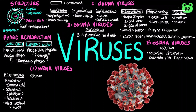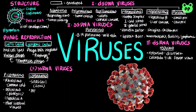Coronaviruses cause mild to severe respiratory tract infections. Some lethal strains include SARS, or severe acute respiratory syndrome, which had an outbreak in 2002; MERS, or Middle East Respiratory Syndrome, which had an outbreak in 2012; and COVID-19, or Coronavirus Disease 2019, which was first identified in December 2019 in Wuhan, China, and has since spread worldwide, leading to an ongoing pandemic.